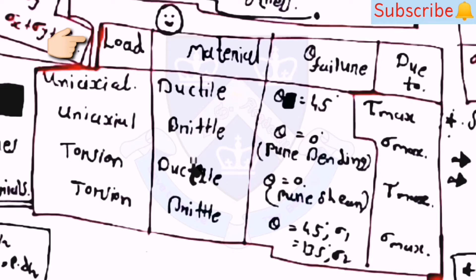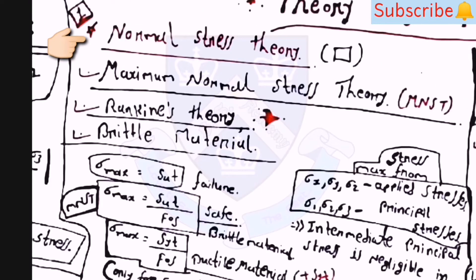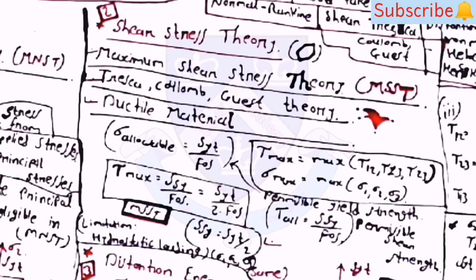First theory: Maximum Normal Stress Theory (MNST), also known as Rankine's theory or the theory for brittle materials. sigma_max = SUT/FOS and sigma_max = SYT/FOS. Second theory: Maximum Shear Stress Theory (MSST), also known as Tresca-Coulomb theory or the theory for ductile materials. Equation: tau_max = SSY/FOS = SYT/(2·FOS).